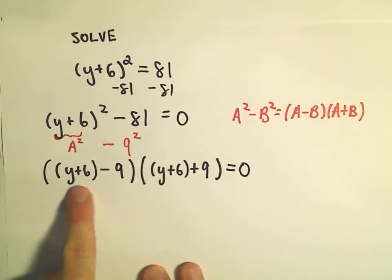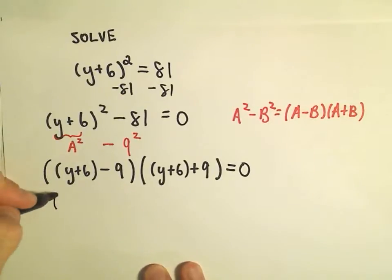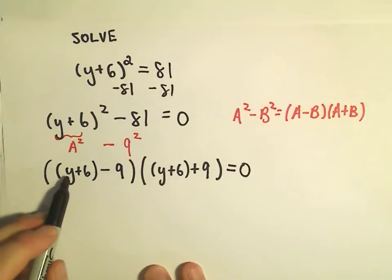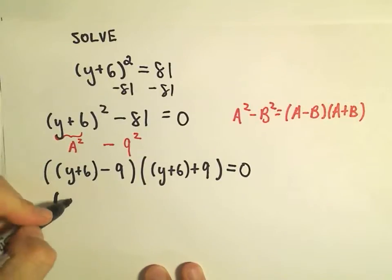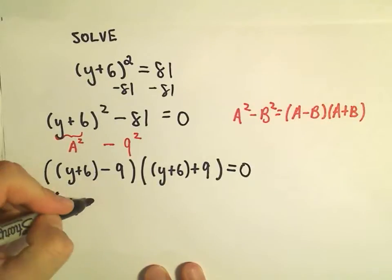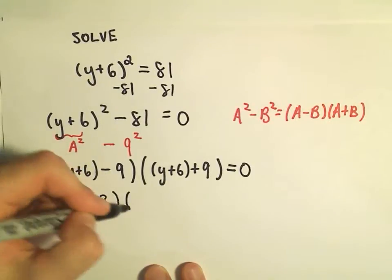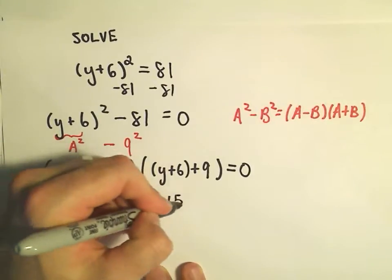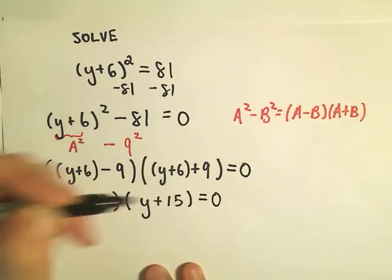And now inside the parentheses, we could think about there being a positive one. So if you distribute that, it would just get rid of the parentheses on the y plus 6. So we have y plus 6 minus 9, which is y minus 3. And then we have y plus 6 plus 9, which is y plus 15 equals 0.